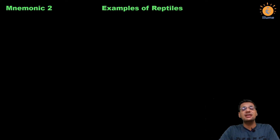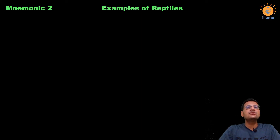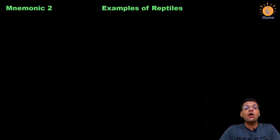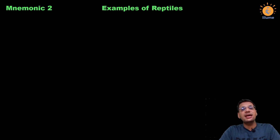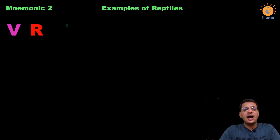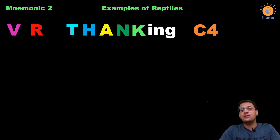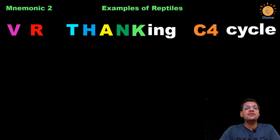To remember the examples of reptiles, we first need to recall the concept of the C4 cycle. The biggest advantage of the C4 cycle is that it helps conserve water and fixes carbon dioxide at a better efficiency rate than C3 plants. So the plants are thanking the C4 cycle for water conservation. Our mnemonic is: 'We Are Thanking C4 Cycle.'